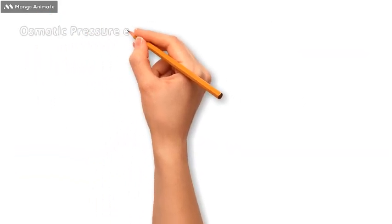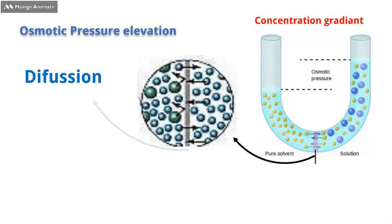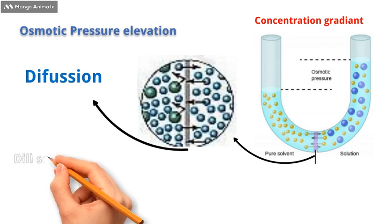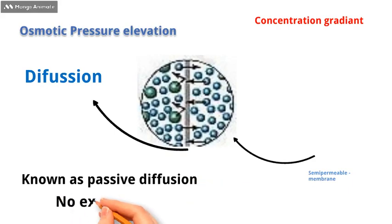Osmotic pressure elevation depends on concentration gradient, which is the diffusion of solvent through a semi-permeable membrane from diluted solution to concentrated solution, also known as passive diffusion, that requires no external energy.